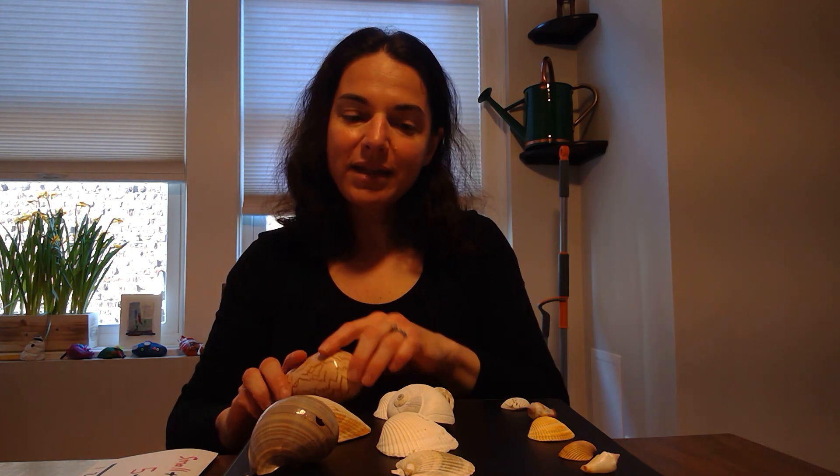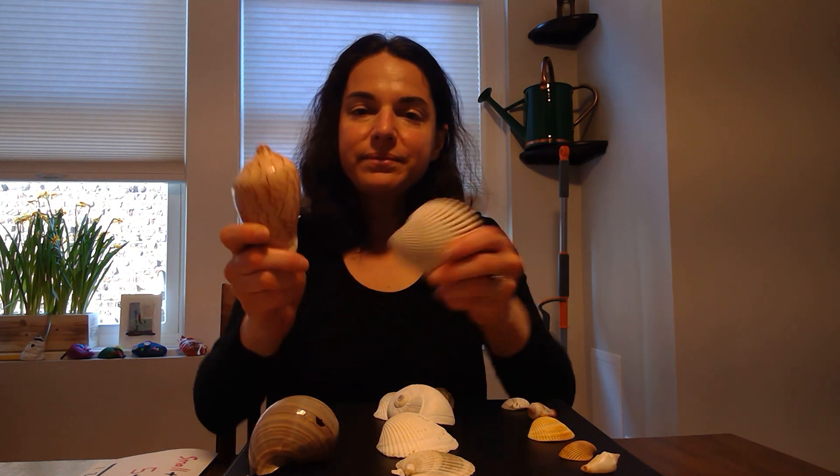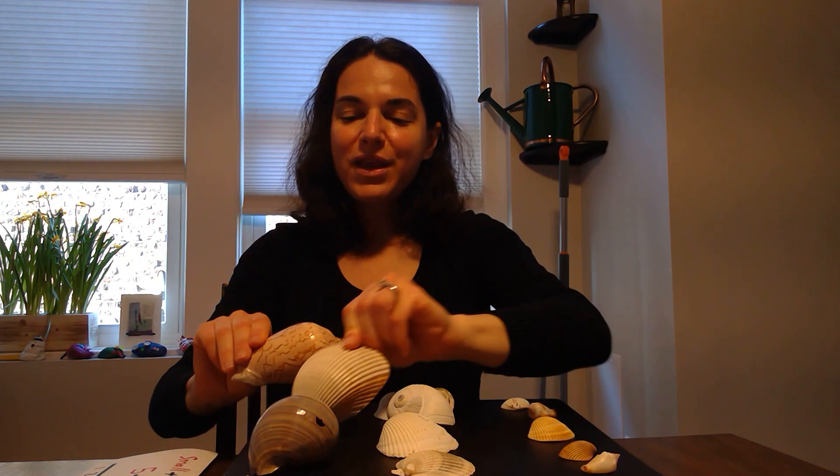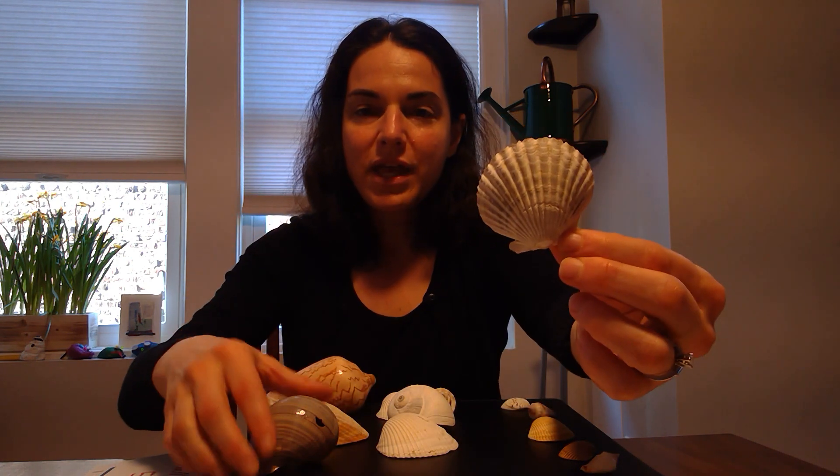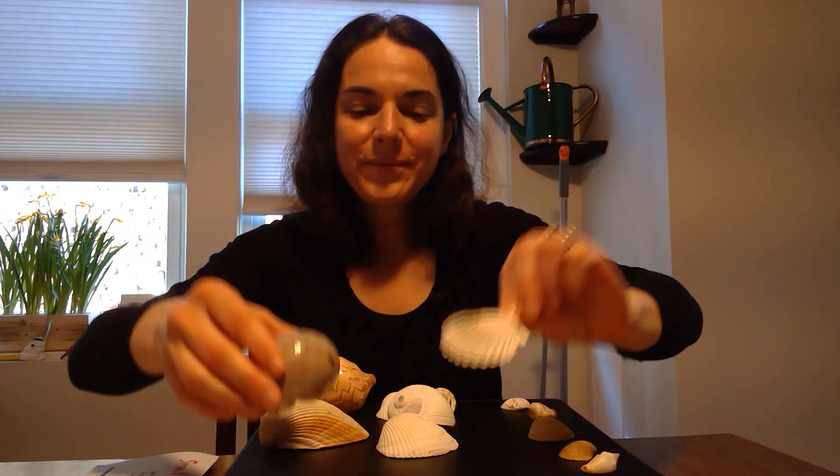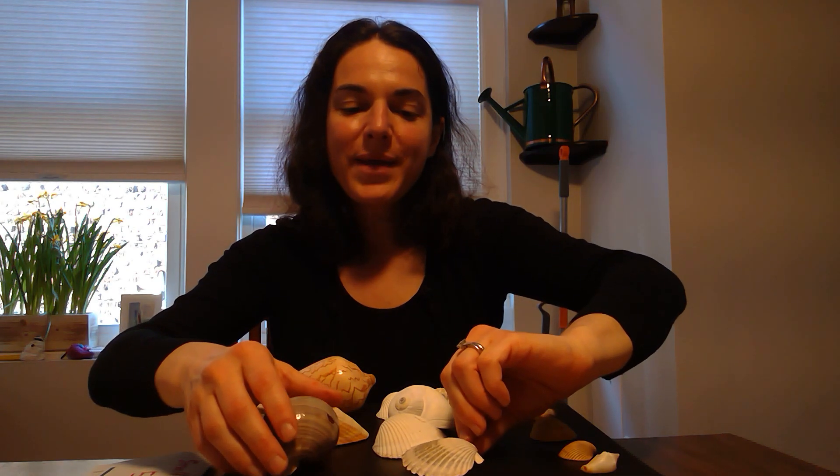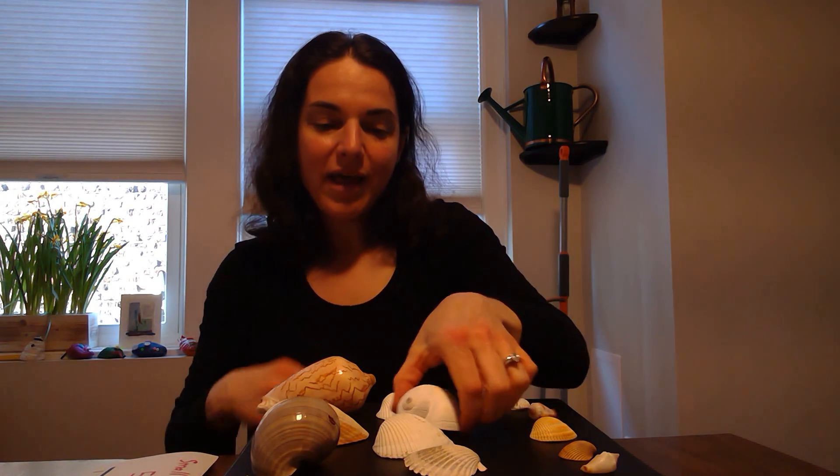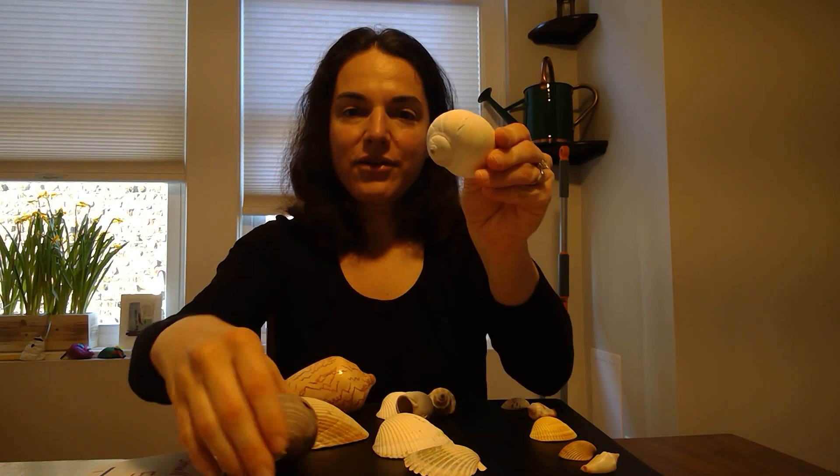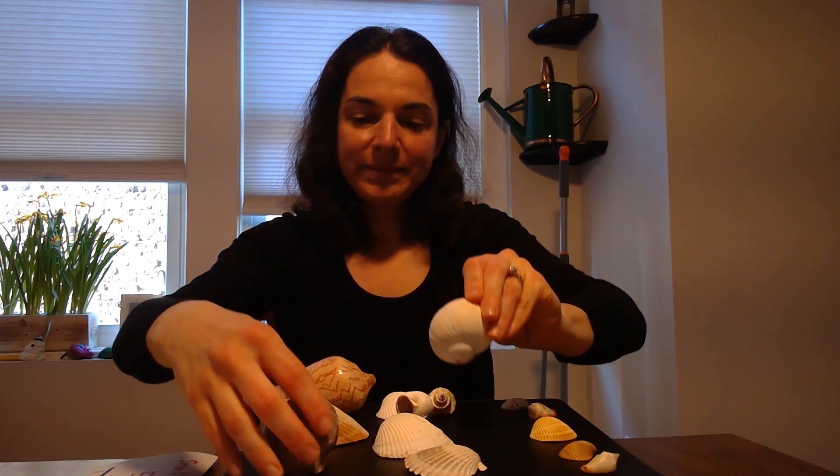When you sort shells, you can sort them in all different ways. You can sort them by different types, by different textures—that's how they feel. So I have bumpy shells and smooth shells. You can sort them by colors. So I have white shells and gray shells. Today I decided to sort them by size. I made a group of small shells, medium-sized shells, and big shells.